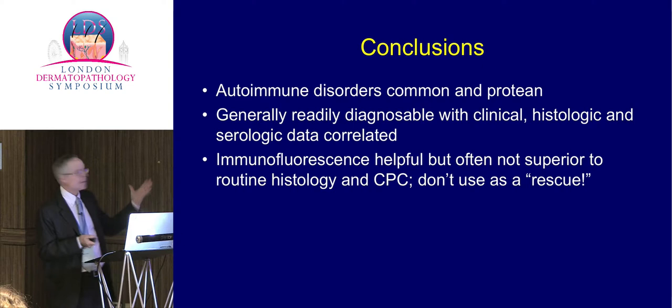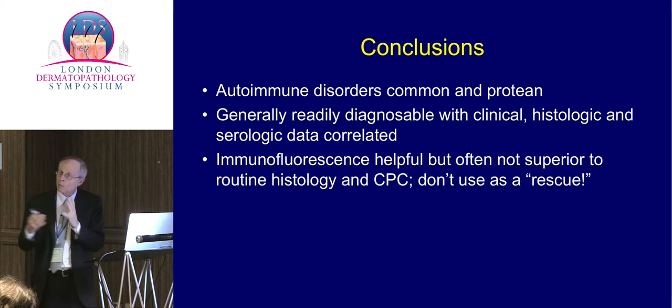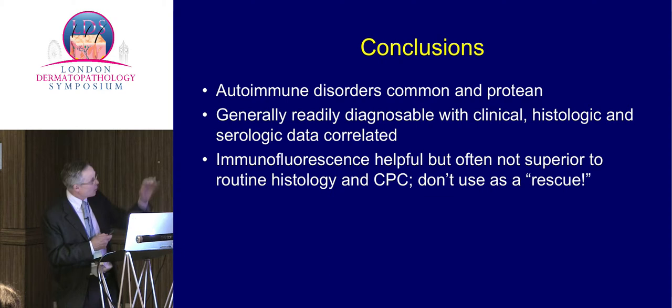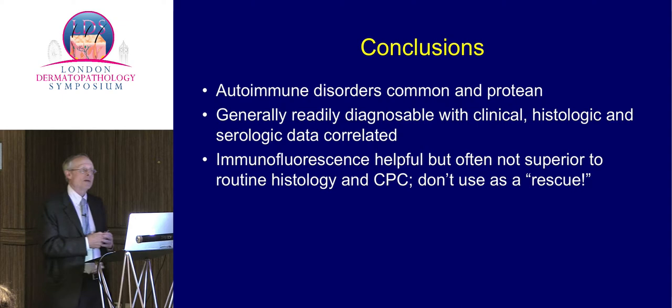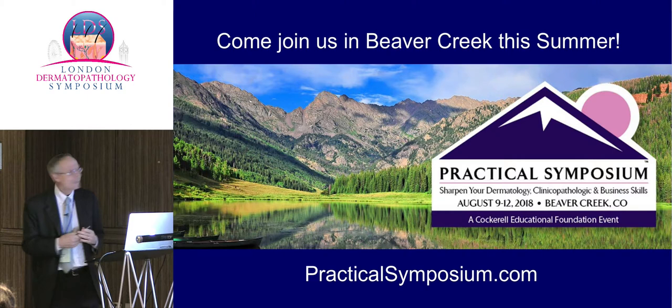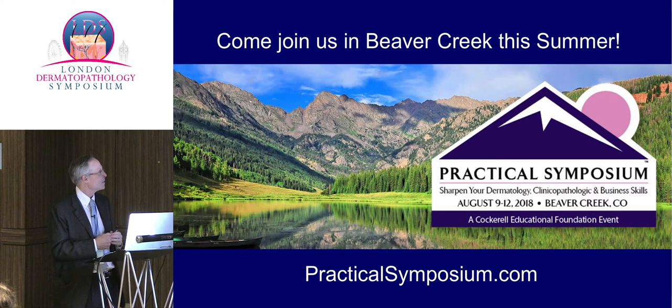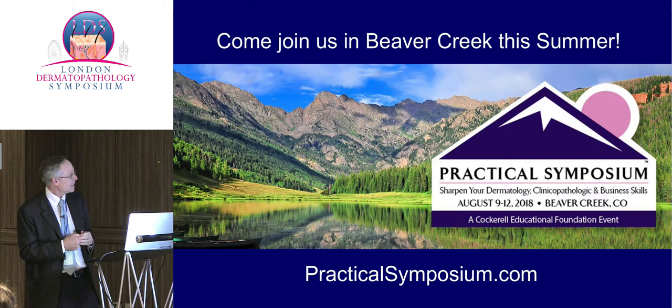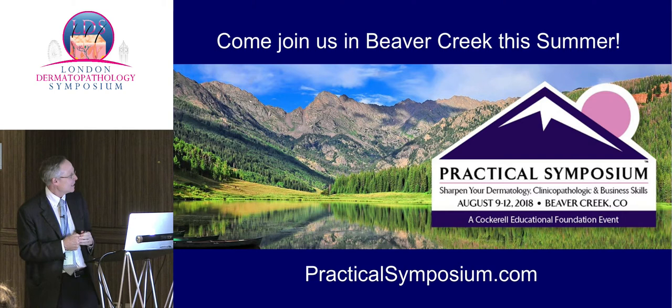In conclusion, these are common and protean conditions, but with good clinical pathologic correlation you can usually make an accurate diagnosis. You have to work together with clinicians and rheumatologists. Don't use immunofluorescence as a rescue — it's a helpful tool but often won't totally bail you out when dealing with these conditions.